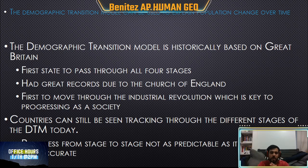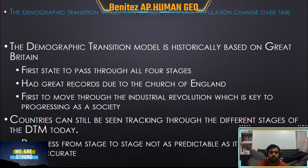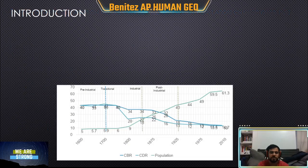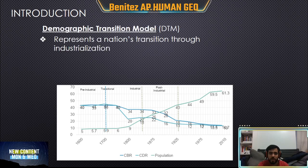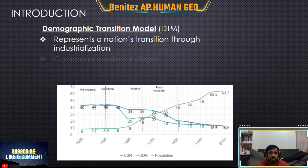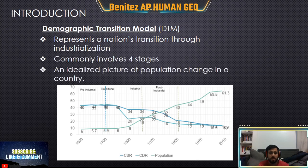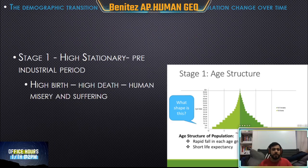Just a heads up — this model is not perfect because it only tracks birth rates, death rates, and total population growth. The Demographic Transition Model tracks how a country grows from stage one and becomes more advanced. There are typically four stages, but many countries are now going into stage five, which we'll talk about shortly.